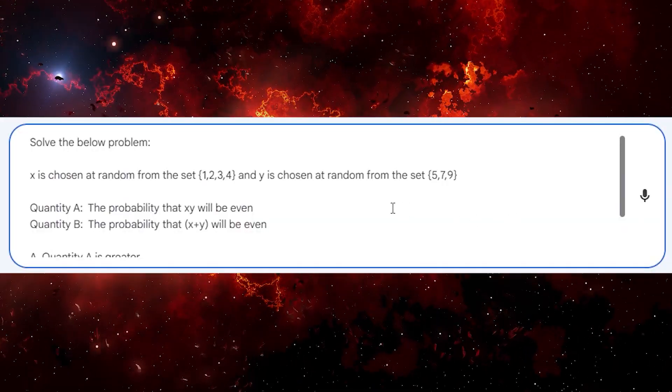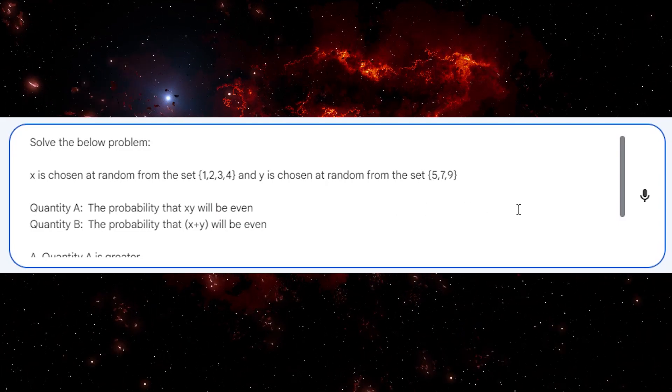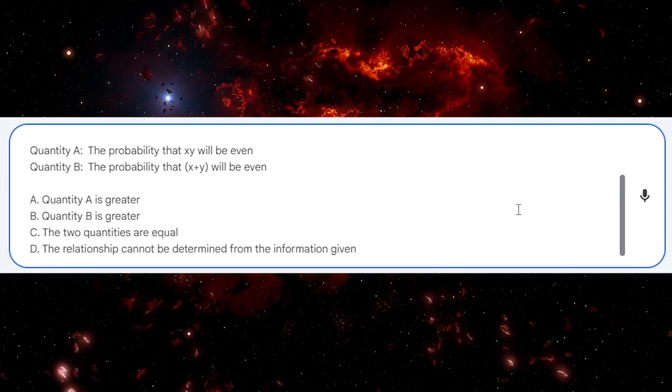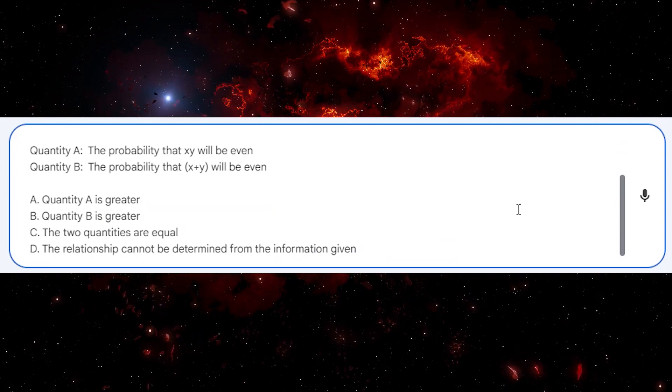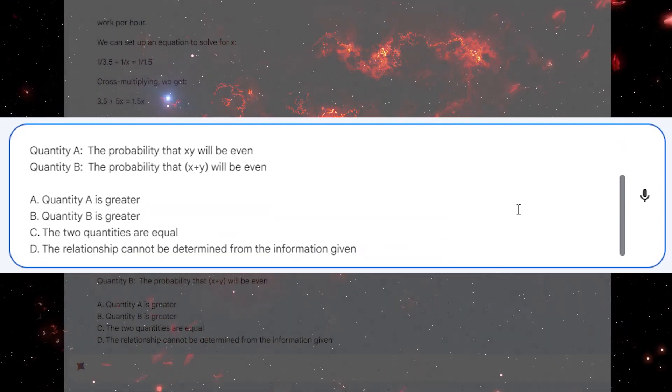X is chosen at random from the set 1-2-3-4, and Y is chosen at random from the set 5-7-9. Quantity A, the probability that X-Y will be even. Quantity B, the probability that X plus Y will be even. And again, the familiar choices, A is greater, B is greater, equal, or can't be determined.